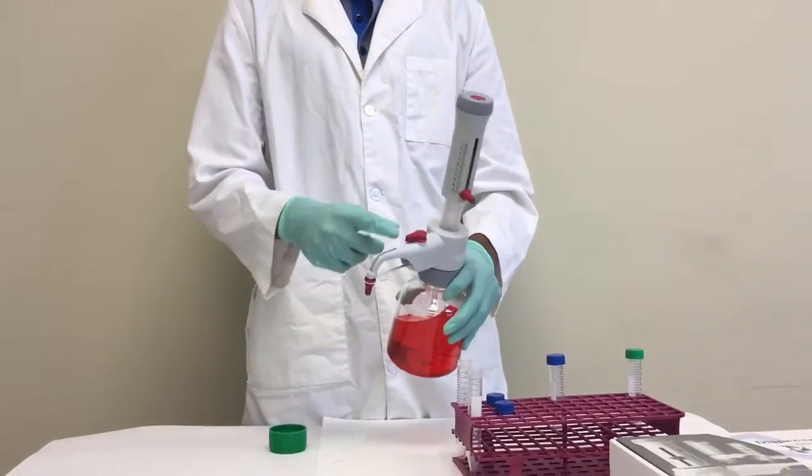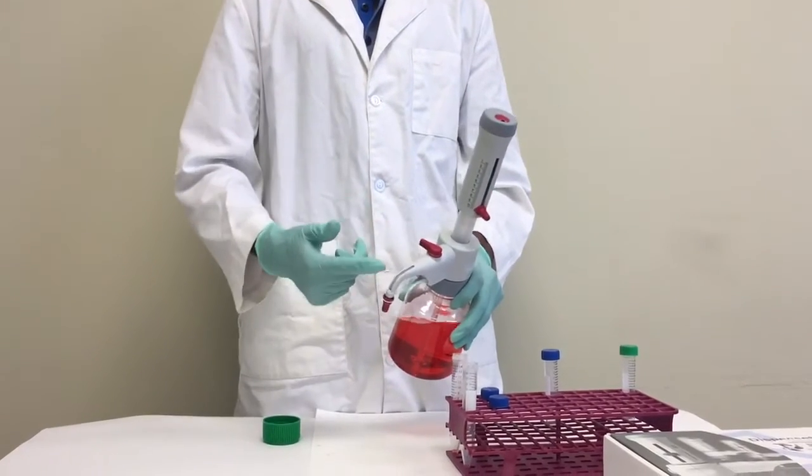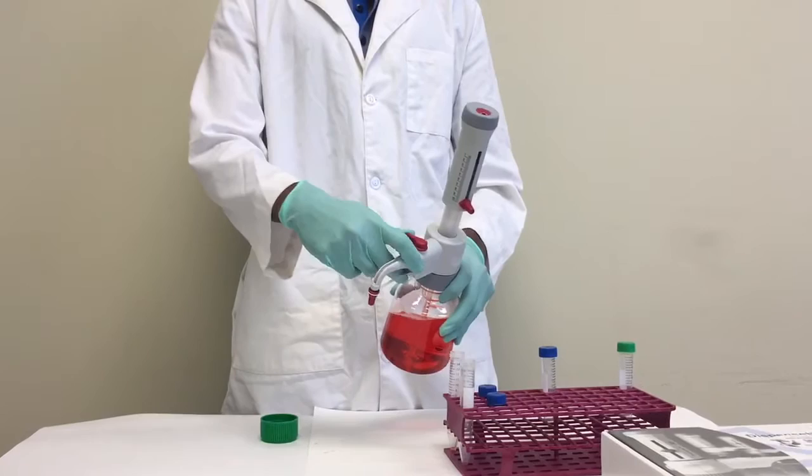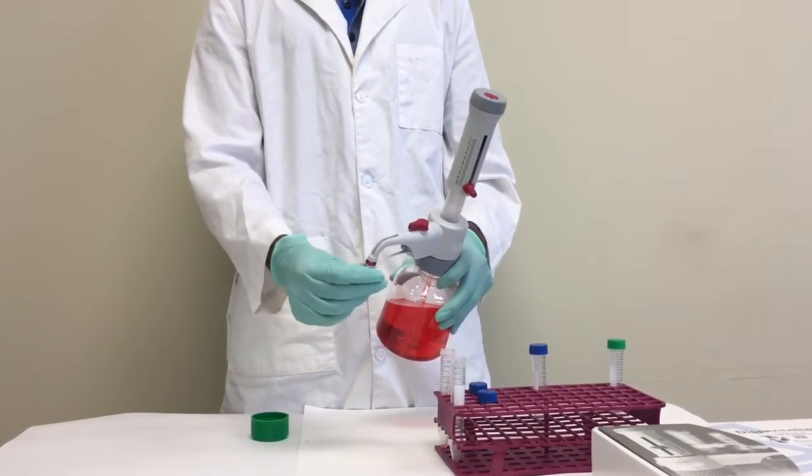Before you dispense, make sure you prime the instrument by switching the recirculation valve to the side, which allows the liquid to recirculate back into the bottle so you can prime without splashing or loss of liquid, which helps increase safety.